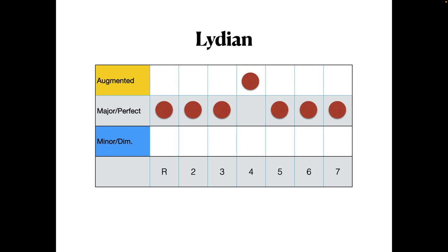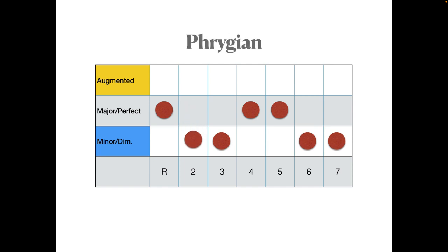If we imagine we have Lydian here with all the degrees at major or augmented positions for the fourth, and moving to Ionian, sharp four goes down to four. Mixolydian, the seventh drops. Dorian, the third. Aeolian, the sixth. Phrygian, second. And Locrian, the fifth drops.